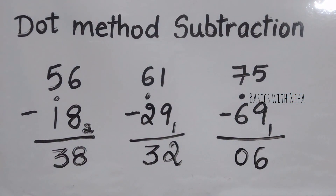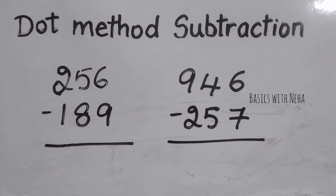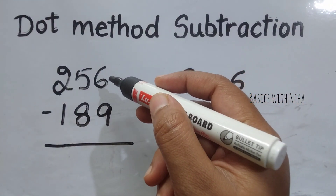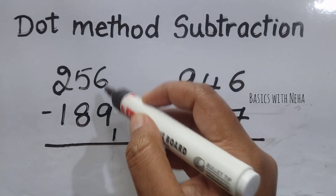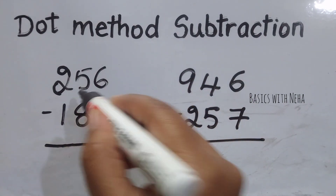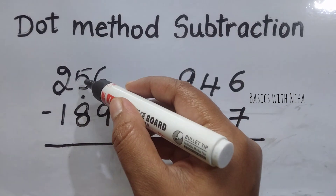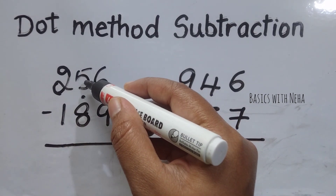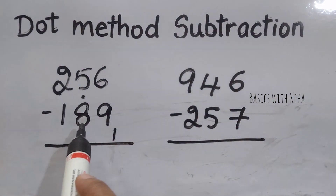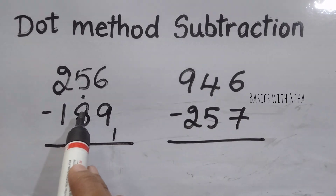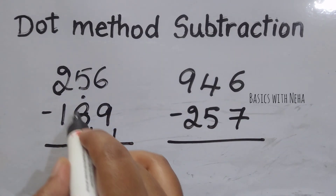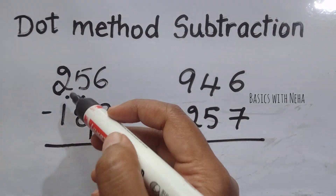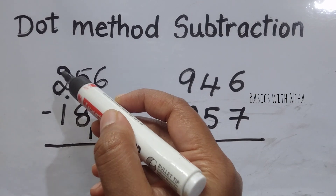Let's try with three digits now: 256 minus 189. The minuend is smaller than the subtraction, so I'm going to take the complement of 9 on base 10, which will be 1. Since I've used the complement, I'll put a dot. With that dot, you have to check again if the minuend is larger or smaller. Again, the minuend is smaller than the subtraction, so I'm going to consider only this number and take the complement on base 9, which will be 1 again.